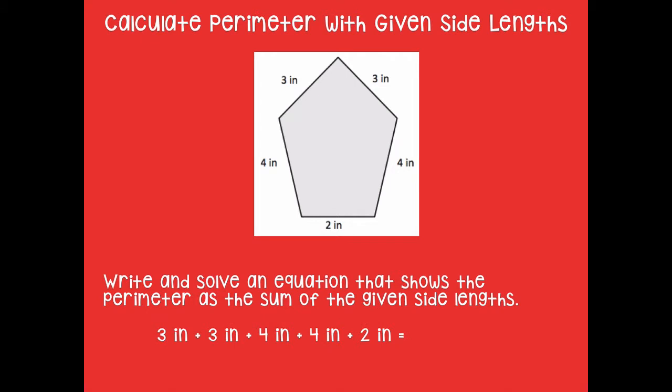Because the perimeter goes around the shape, so we can add 3 plus 3 plus 4 plus 4 plus 2. That's the equation that shows the perimeter as the sum of all the given side lengths. So fancy way of just saying we're going to add all the side lengths.